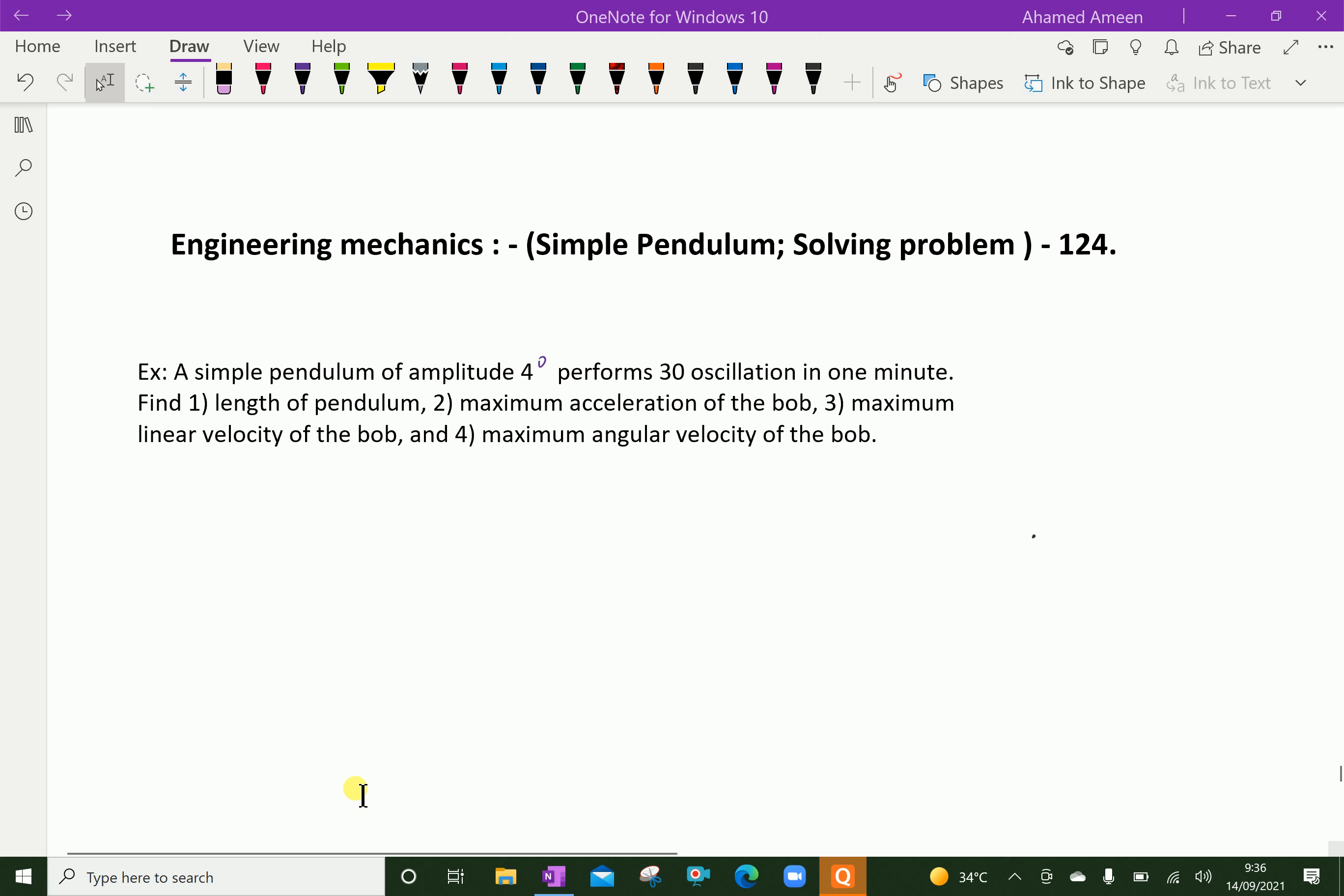The given things, first, angular amplitude. Theta equals 4 degrees, which is converted to radians, is 4π over 180 radians.